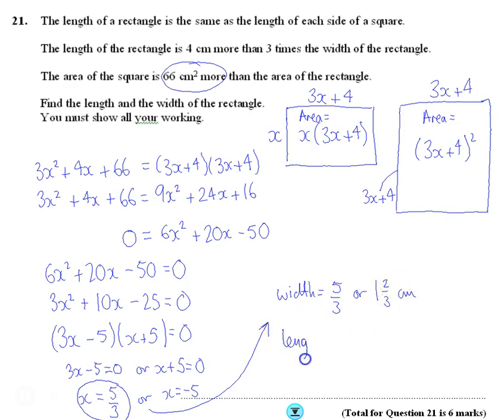And the length, well, we're going to multiply it by 3 and add 4. So it's 3 lots of my 5 over 3, plus 4. Which is 3 over 3. So it's 5 plus 4. Which is 9 centimeters. So the width is worth 1 and 2 thirds. And the length is worth 9.